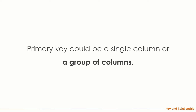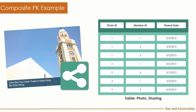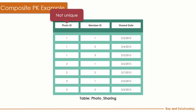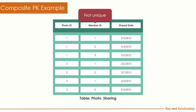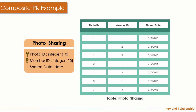A primary key can be a single column or a group of columns — when you define more than one column as a primary key, we call it a composite key. For example, in a photo sharing table, one photo can be shared to more than one member, and one member can have multiple photos shared to them. Neither photo ID nor member ID alone is unique in that table, so we combine these two columns to form a unique primary key. Both columns will show the key icon on the left-hand side.